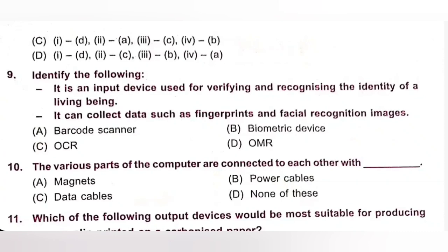So, option B, biometric device. It is an input device used for verifying and recognizing the identity of a living being. It can also collect data such as fingerprints and facial recognition images. Option B is the correct answer.